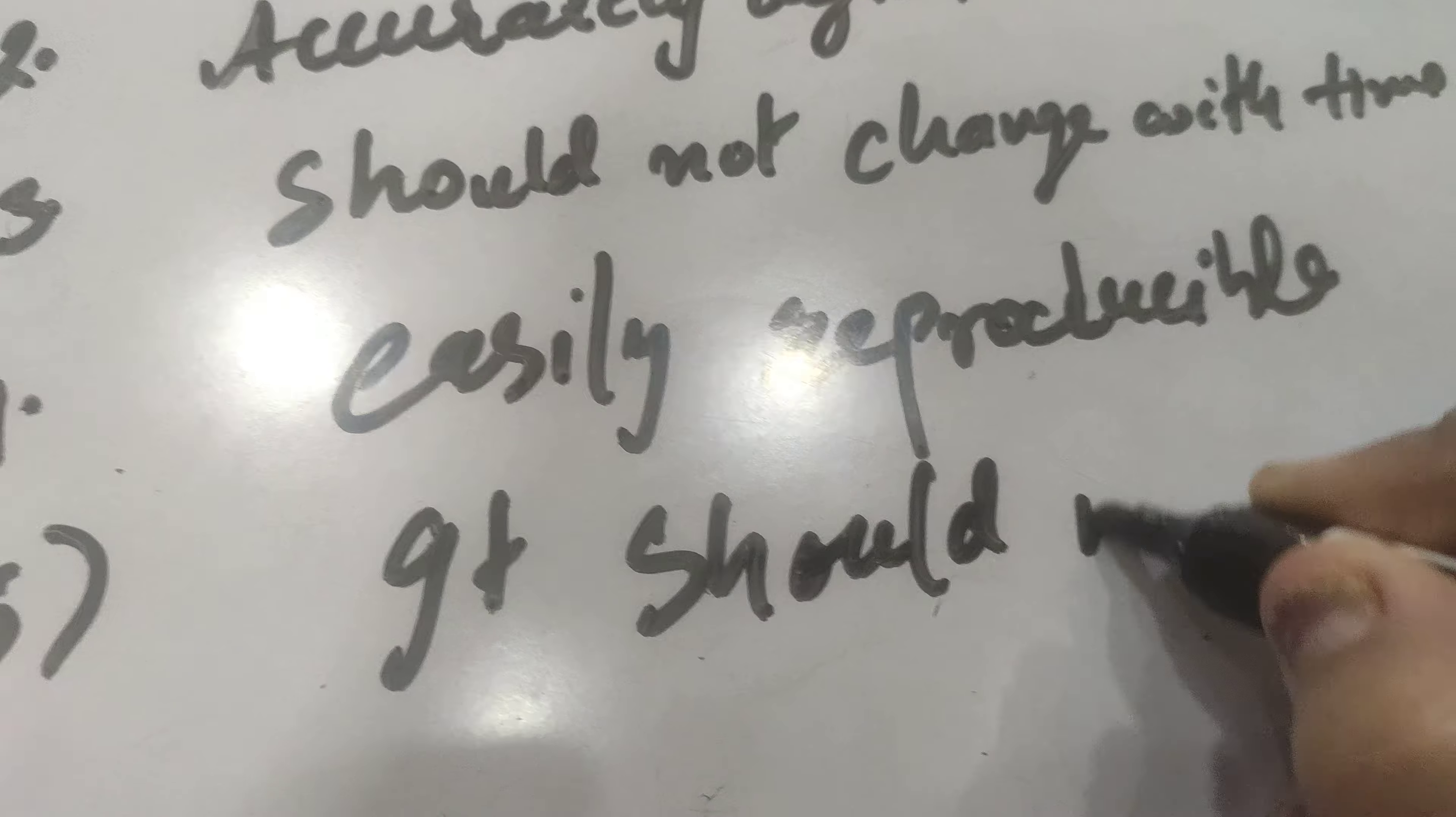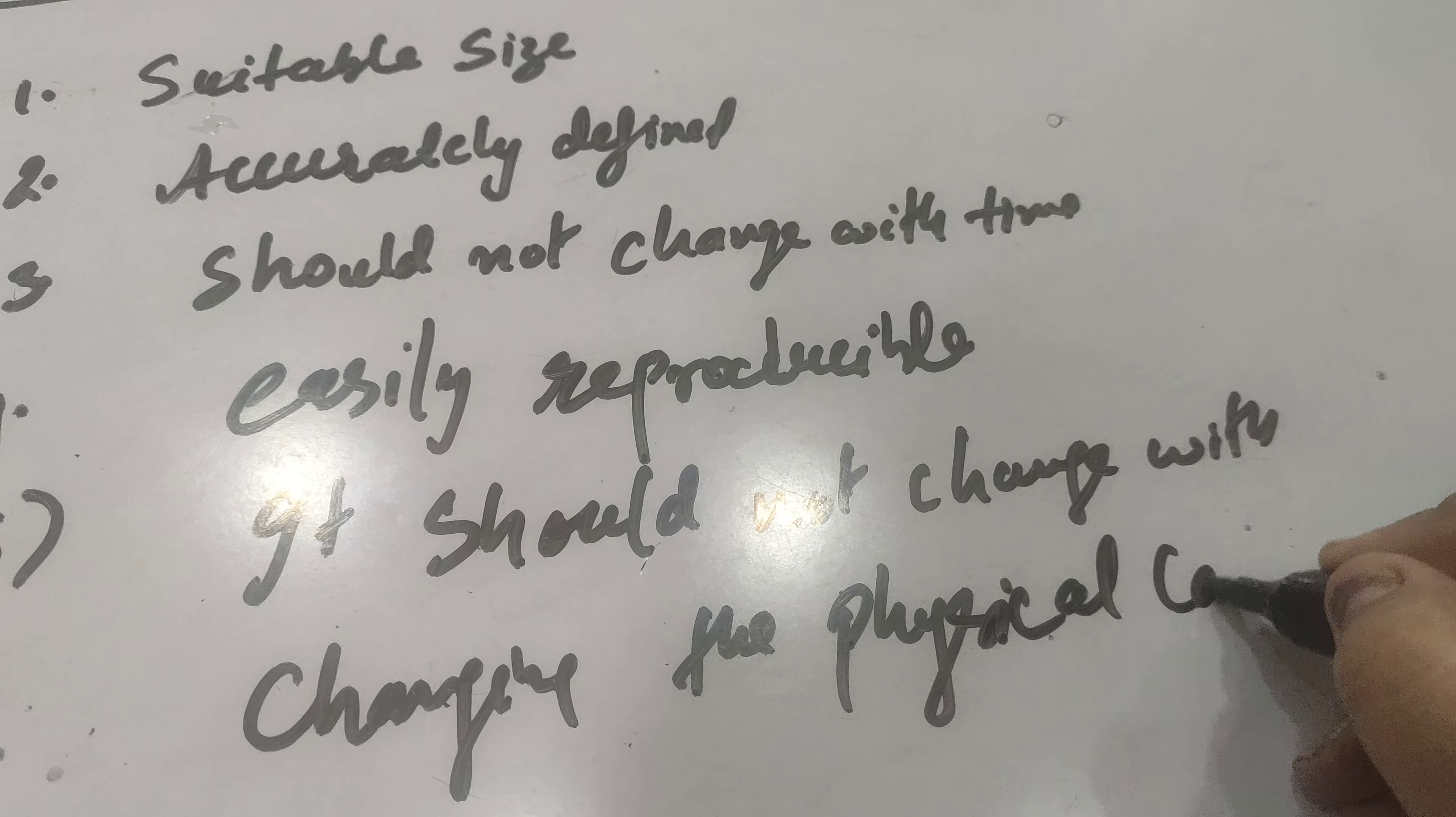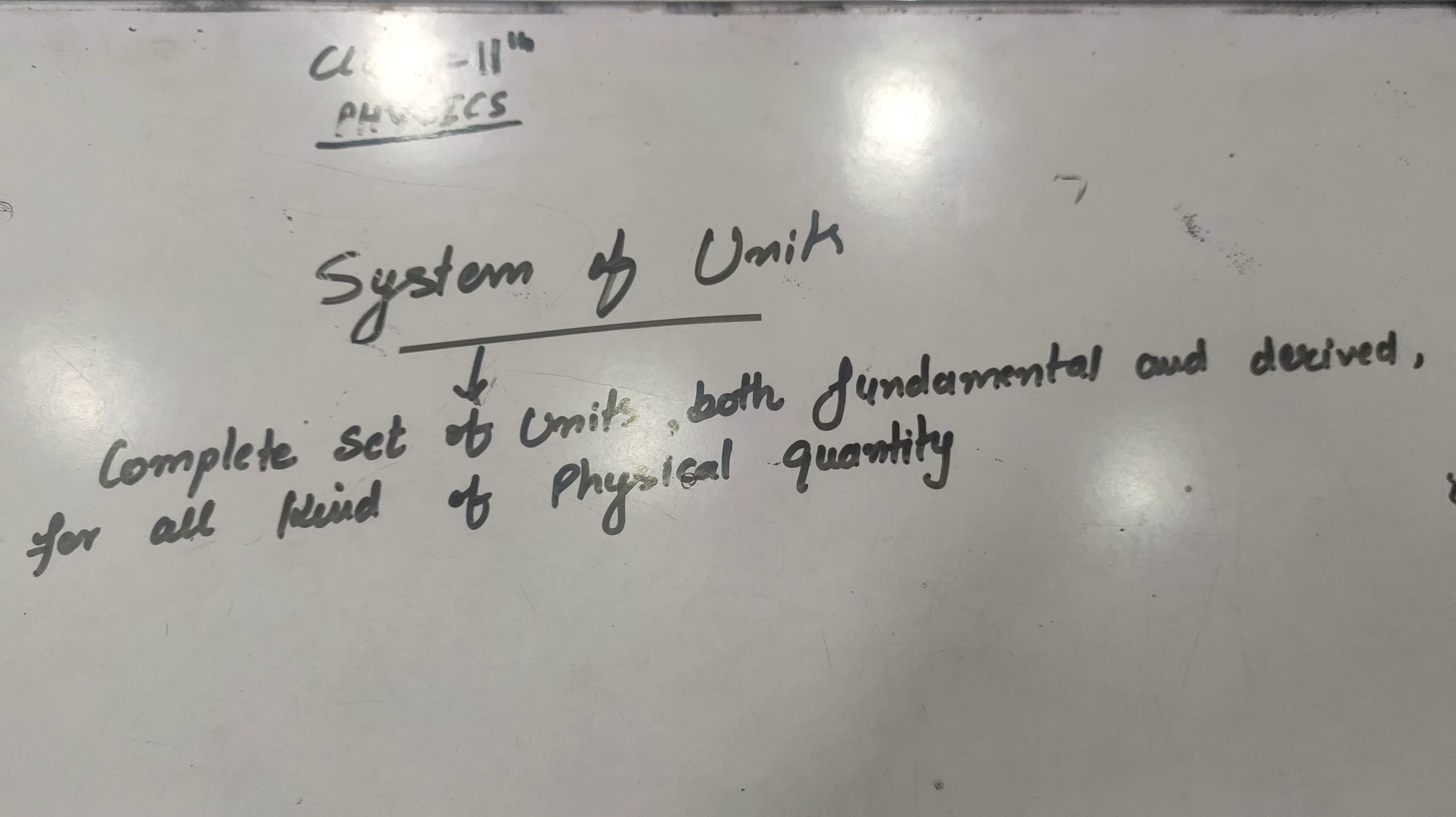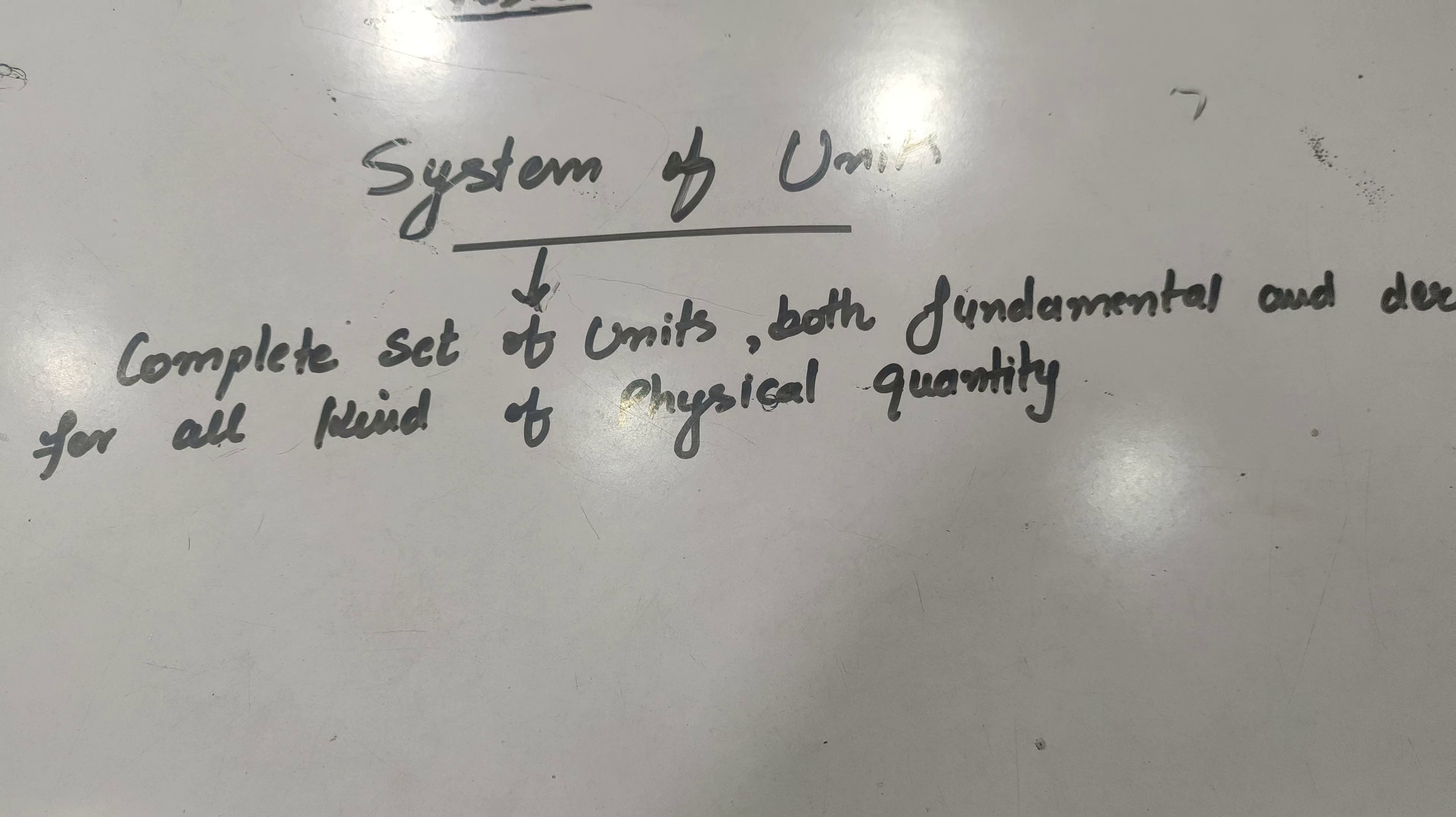System of units: it is a complete set of units, both fundamental and derived, for all kind of physical quantities. Means a system which is having all kind of units like fundamental and derived for all physical quantities is called system of units.